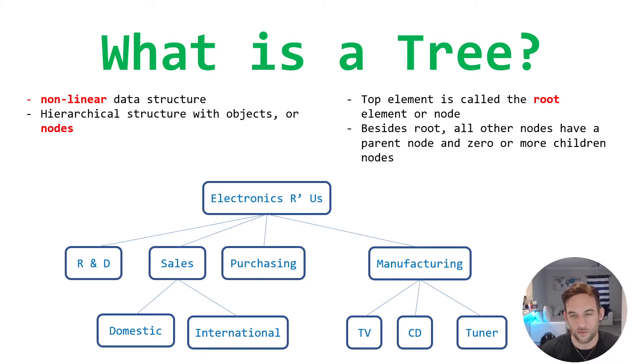So when we think of a tree, the first thing you need to understand is the top element is always going to be the root element or the node. We're going to call them nodes, but sometimes we can say elements as well. And then besides the root, all other nodes have a parent node and zero or more children nodes. So it basically means sales, for instance, this node can have zero or more children nodes, so it has two in this case. Sales goes down into domestic and international. If we look at R and D, this still satisfies it because it actually has zero children nodes, and that satisfies a basic tree.